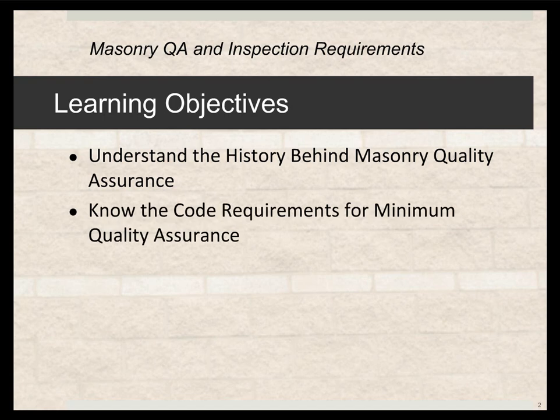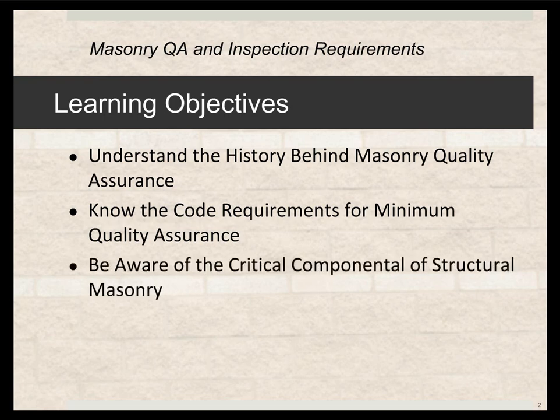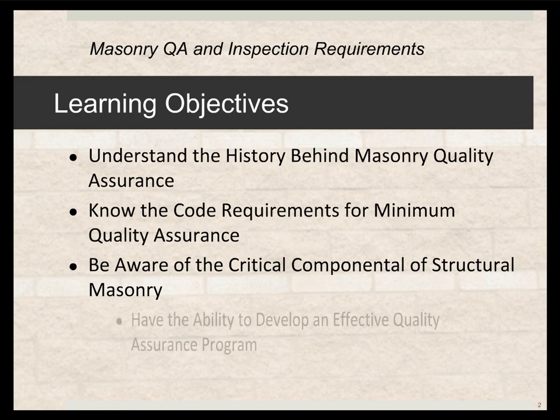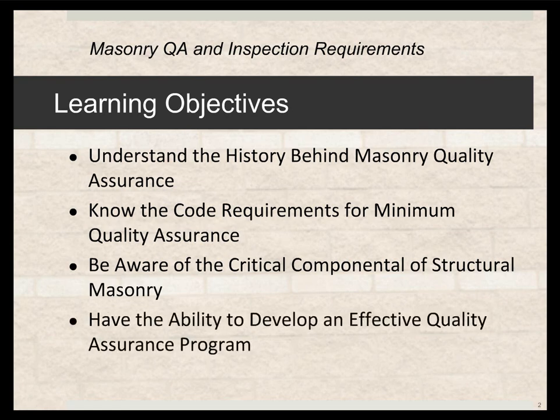We also need to know the code requirements for minimum quality assurance and when and where we should raise that minimum level to suit our project. We need to be aware of the critical components of structural masonry. What is important — and I think we all have a pretty good sense of that — is that we want to get the structural system not only designed but constructed so that life safety is not going to be a concern.